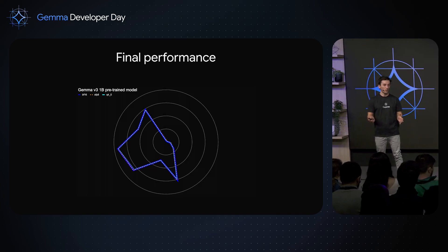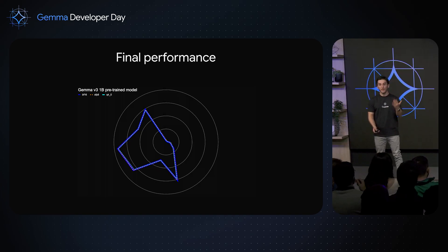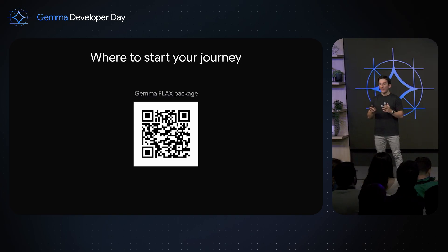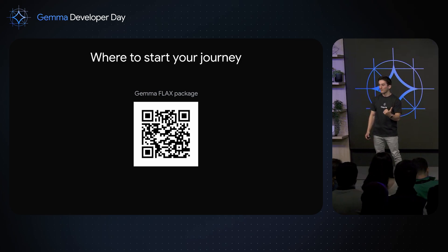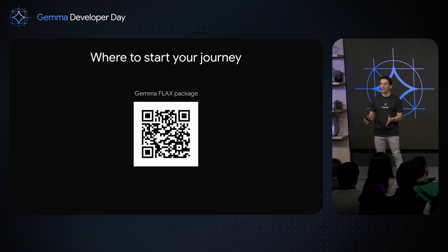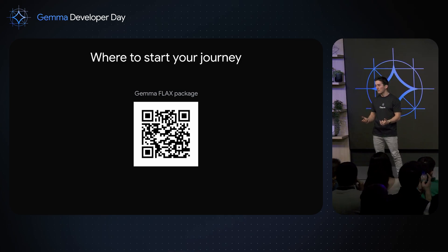You'll find all of these checkpoints on Gemma.cpp, llama.cpp, Hugging Face, MediaPipe, and pretty much everywhere. Everything is available — this will direct you to the Flax implementation, where you can run the models quantized with integer values and do quantization-aware training on your own data. This works with just one GPU, so you don't need much compute. You can fine-tune on your own data with privacy by design and run it locally. Hopefully that was interesting — thank you for your attention.